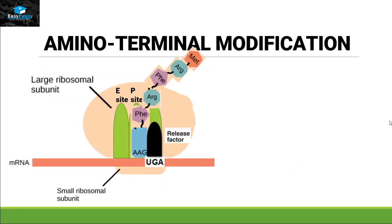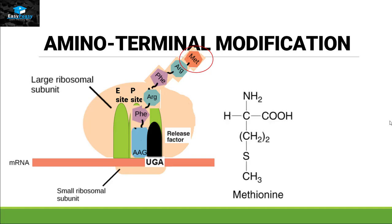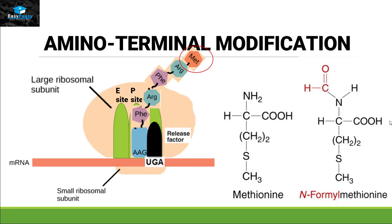Let's start with amino terminal modification. As we know, when translation starts, the first codon is AUG and it codes for methionine. In a eukaryotic organism it will be methionine, and in a prokaryotic organism it might be N-formyl methionine. In both situations, methionine is the first amino acid generated in a protein.